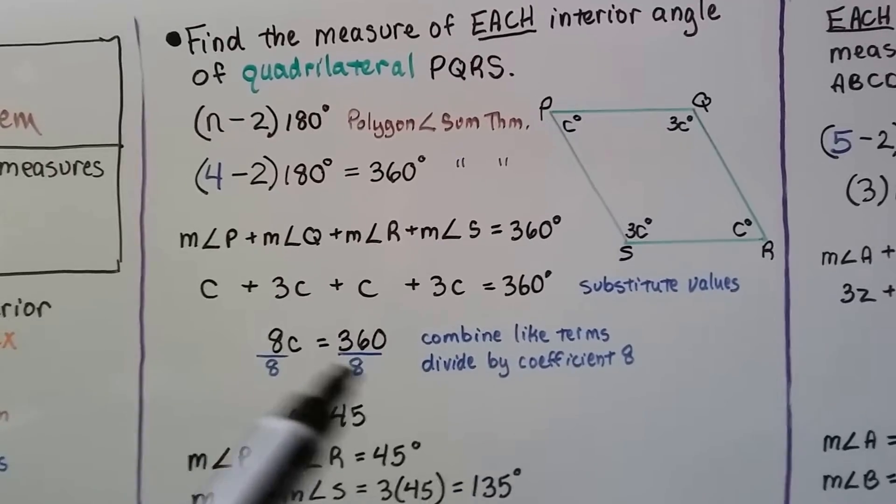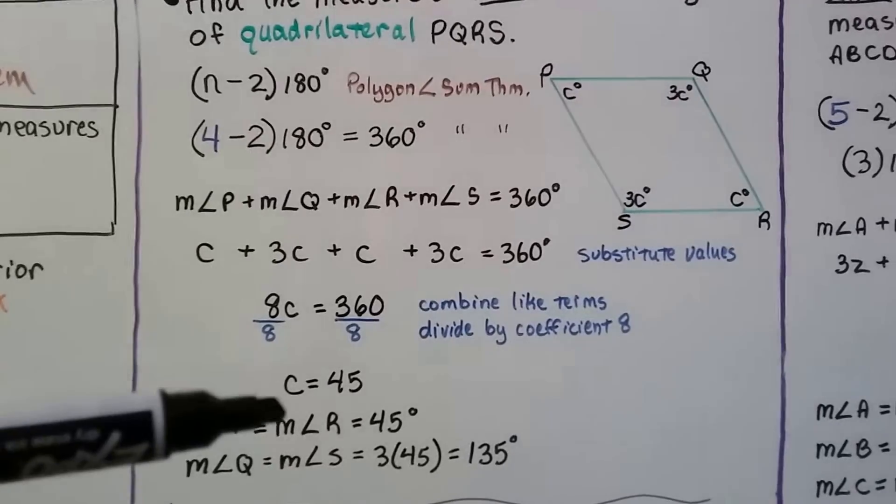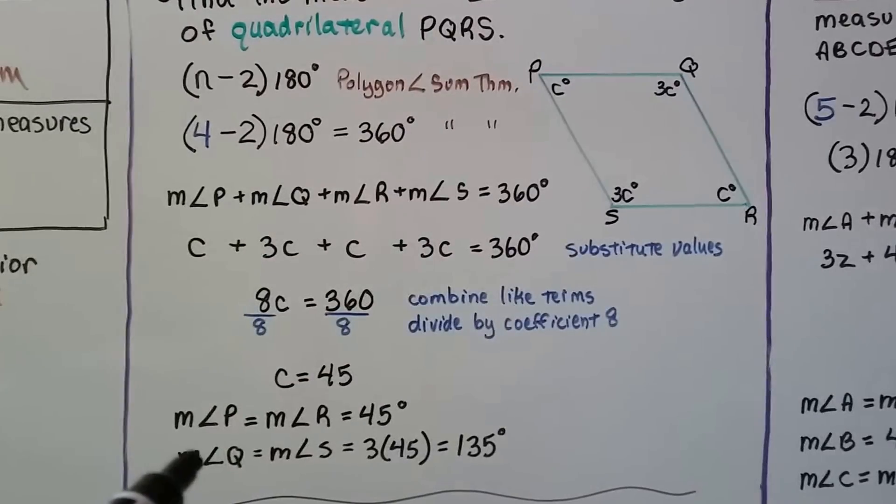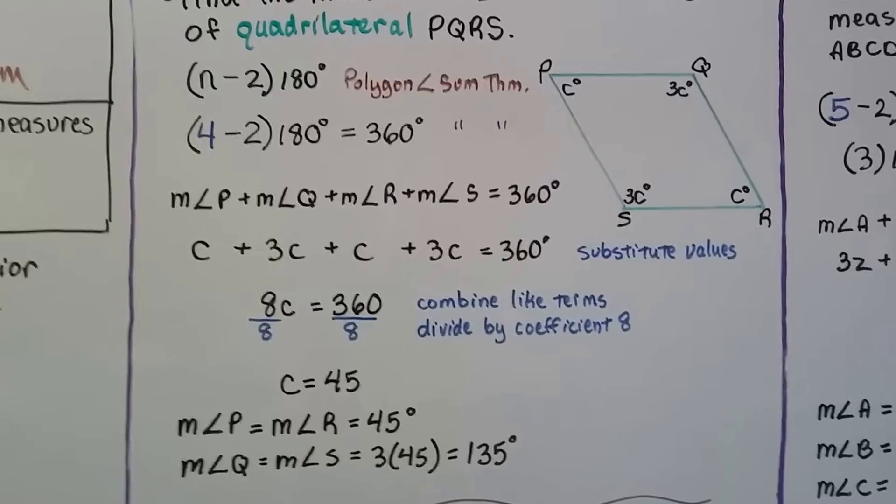We divide by the coefficient 8 and find that C equals 45. Measure of angle P and measure of angle R are 45 degrees because they're C. Measure of angle Q and measure of angle S are 3 times 45, so they're 135 degrees.